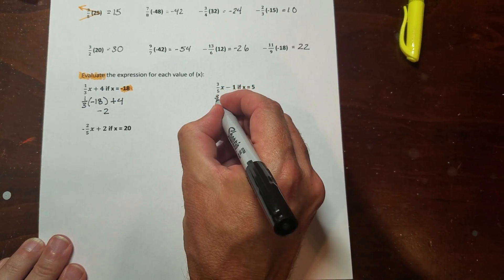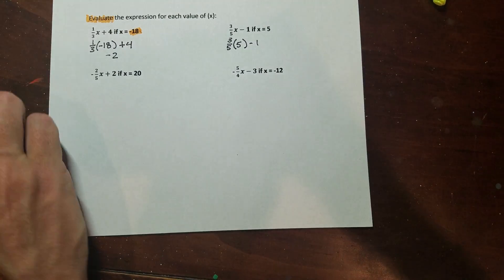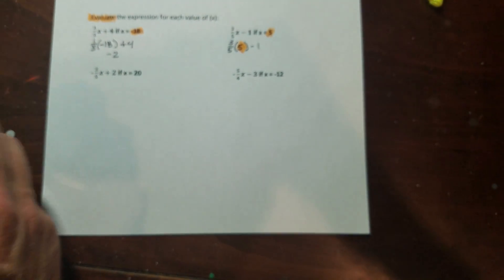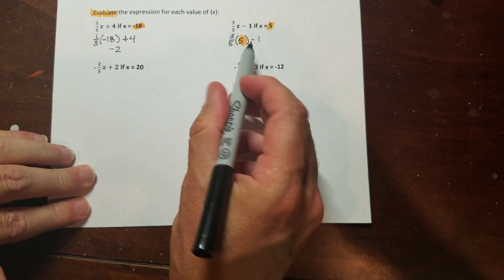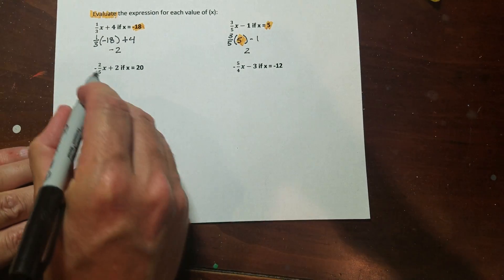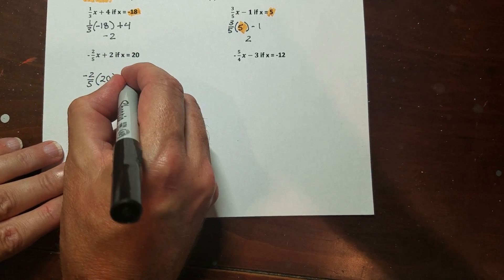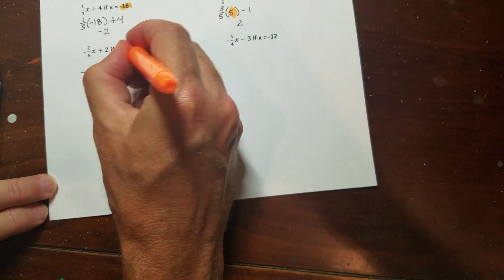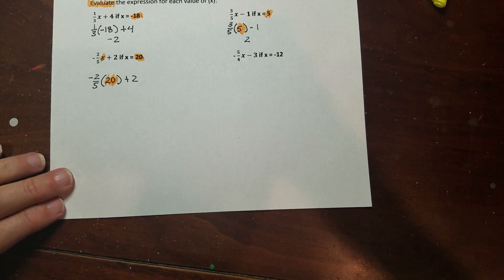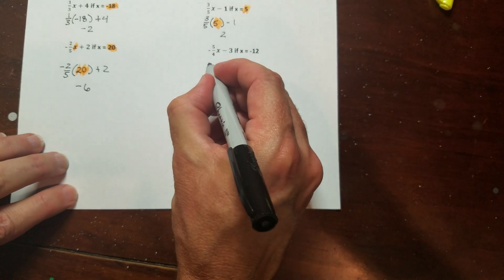So I evaluated this with that being the x. This one over here, I'm going to go ahead and plug in the five. I'll pop five in right there. Again, this is kind of like what's going on in my head. So five goes into five once, one times three is three, three minus one is two. This one over here, I'm going to pop the twenty in there like that. Let's see, it's taking the place of the x. So I have five goes into twenty four times, four times negative two is negative eight. Negative eight plus two is negative six.